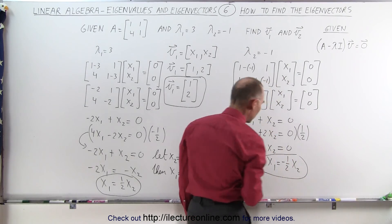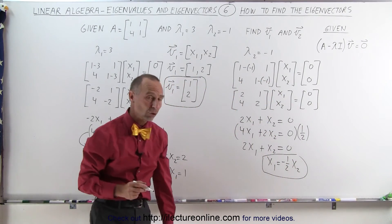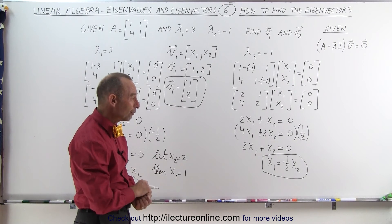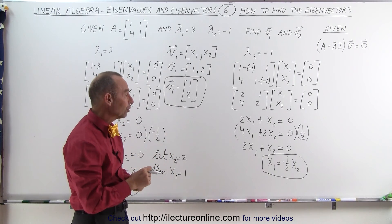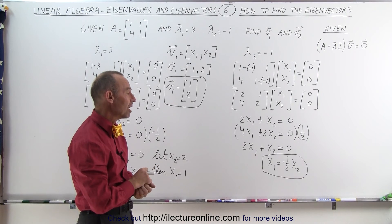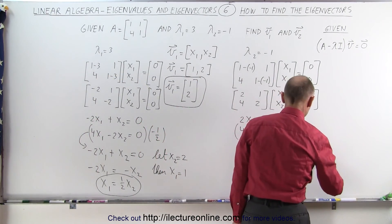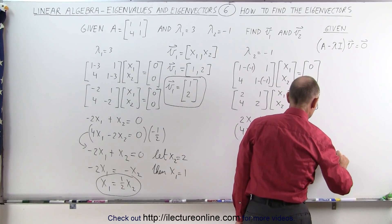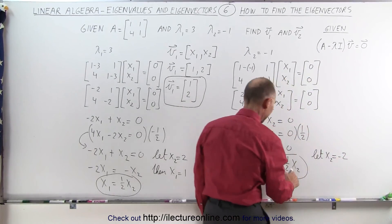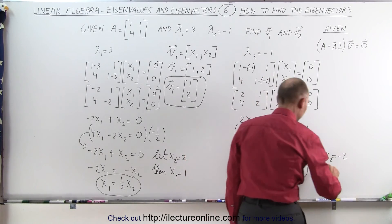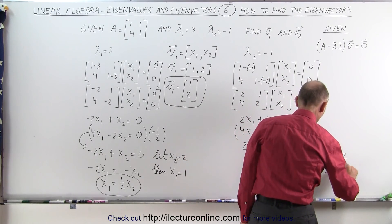So now I have a relationship between x1 and x2. Since x1 is the smaller of the 2 in magnitude, I'm going to let x2 be negative 2. If I let x2 be negative 2, then x1 is the negative 1 half of that, so therefore x1 will be equal to a positive 1.